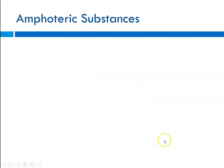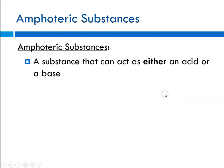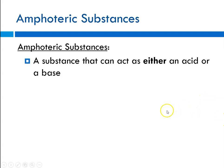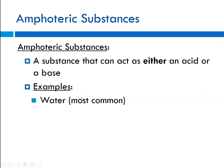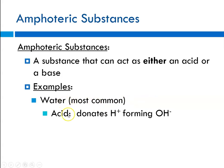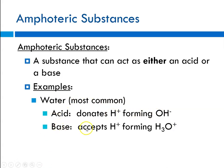We also need to discuss amphoteric substances. An amphoteric substance can act as either an acid or a base depending on what surrounds it. The most notable example is water. Water is our most common amphoteric substance — it can behave as both an acid and a base, meaning it can act as a proton donor, forming the hydroxide ion, or accept a hydrogen ion, forming the hydronium ion.